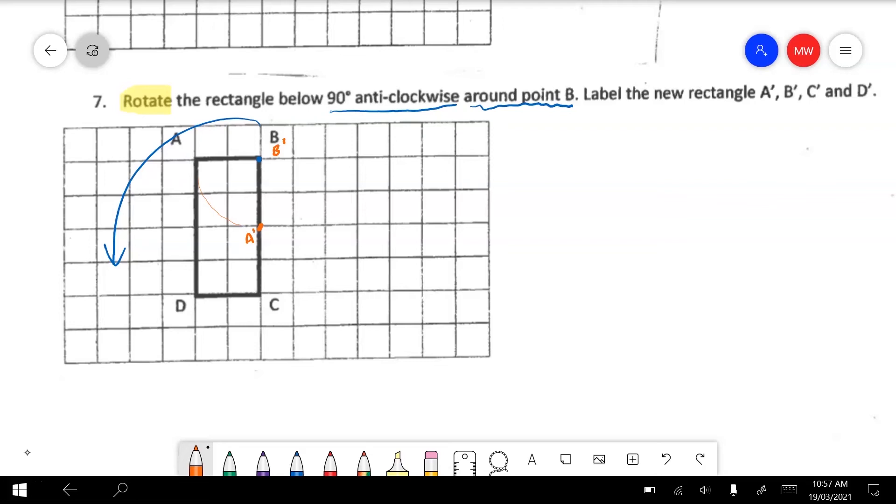D will swing up to here and become 90 degrees up to here and that will become D dash. And C will spin up to here and become C dash. Now I've drawn all over that and made a mess of it. We'll just clean it up. We've got our new points. So we'll just draw our new position. And our question is completed.